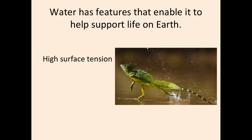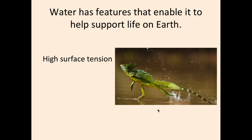Now, water has particular properties related to that polar covalent bond and those hydrogen bonds that exist between molecules. One of these properties is its high surface tension. It will allow animals such as the Jesus lizard to run across the water. It will also enable insects to float along the top — they just kind of stand and walk across the top. It allows some increased buoyancy and enables leaves to stay at the top of the water. And within the sciences, it's what forms that meniscus — that curved top to the water — when looking at the side of a graduated cylinder.